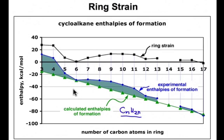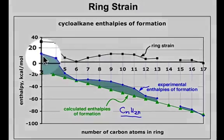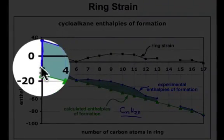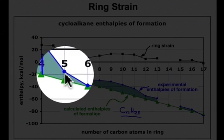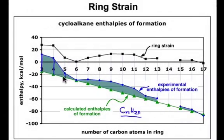Then we measure the experimental enthalpy of formation for the cycloalkanes, shown in blue. Notice that none of those heats of formation are as low as the values calculated from the linear alkane. The difference in those energies is what corresponds to the ring strain shown here.